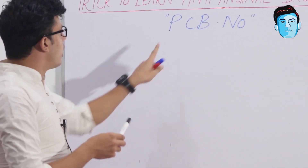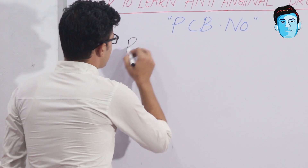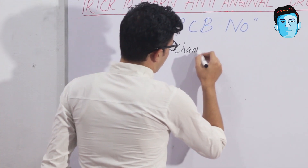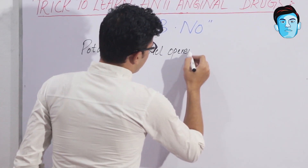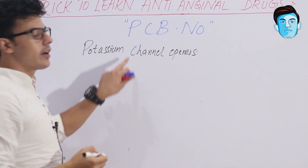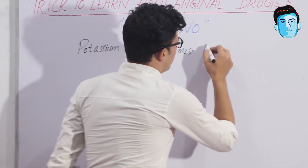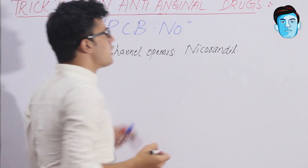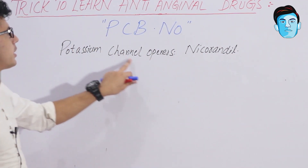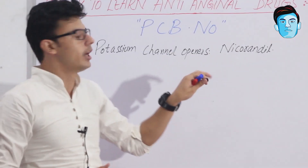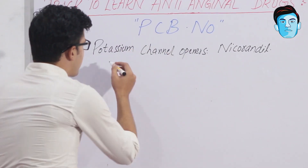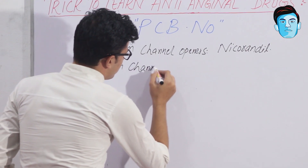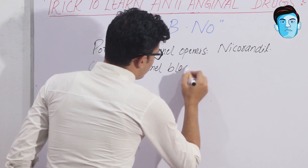P stands for Potassium Channel Openers. Under this class, we have Nicorandil — it is the only drug that comes under the potassium channel opener class of anti-anginal drugs.